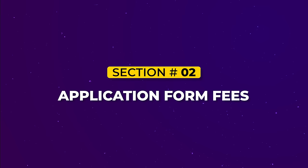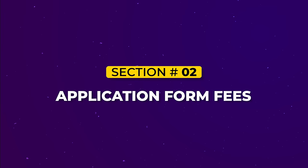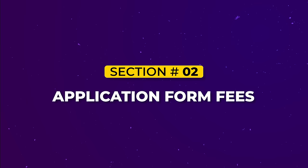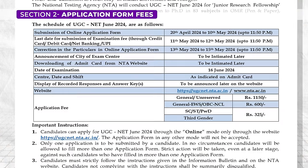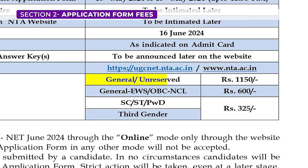Section 2: Application Form Fees. Let's talk about the application fees for the UGC NET June 2024 exam. As you can see on the screen, for general category candidates, the fee is set at ₹1150. If you fall under the EWS, OBC, or NCL category, it's ₹600 for you. And for those in the SC, ST, PWD, or third gender category, the fee is ₹325. It's super important to pay attention to these fees and make sure you are submitting the correct amount based on your category.